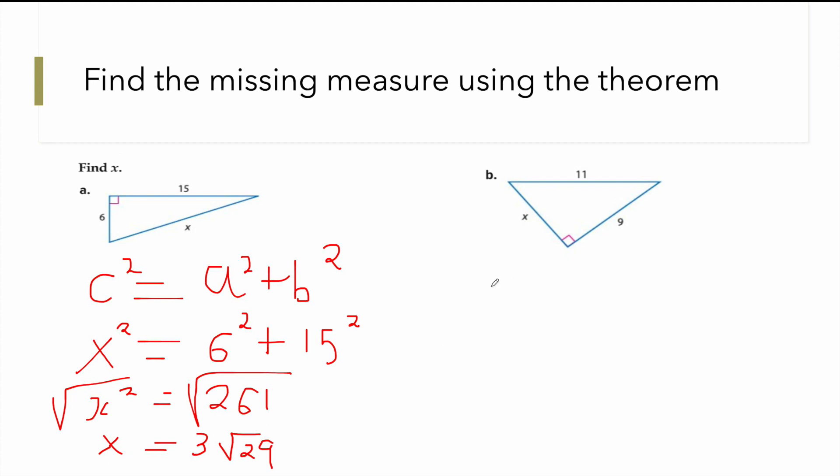Let's look at question B. Now in this question we have the first leg and the second leg, and we are given the hypotenuse, so we are looking for one leg. Now we write the theorem C squared equals A squared plus B squared. Our C is 11. The easy way to remember where is your C: it is always opposite of the right angle and it's also the longest side of your triangle.